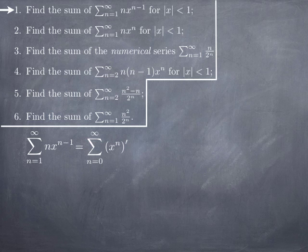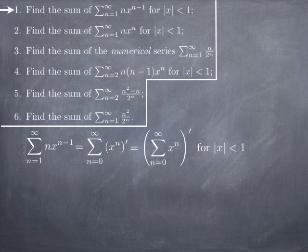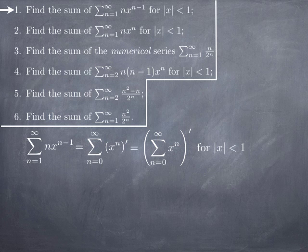That is simply the derivative of the series of general term x^n, as long as that series is convergent. If we are in the open interval of convergence, that's thanks to the theorem on term-by-term differentiation or integration of power series. We know that the series of general term x^n is absolutely convergent for |x| < 1, because this is a geometric series of first term 1 and common ratio x, with sum 1 over 1 minus x.